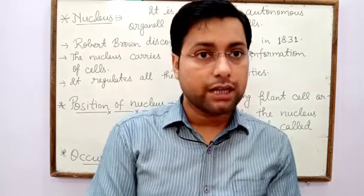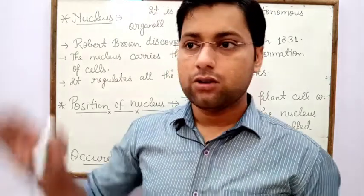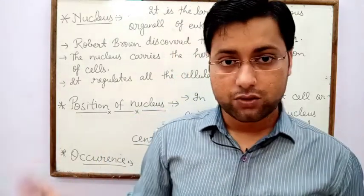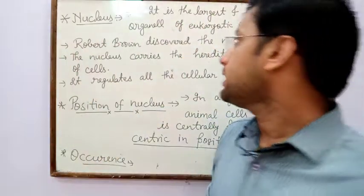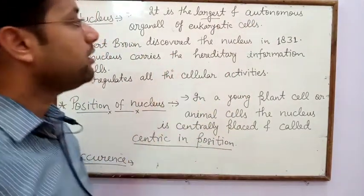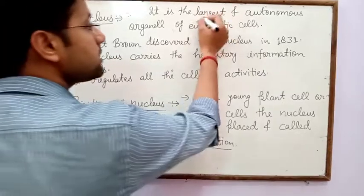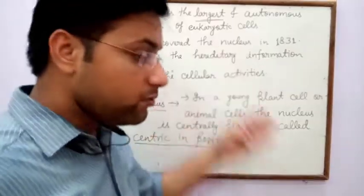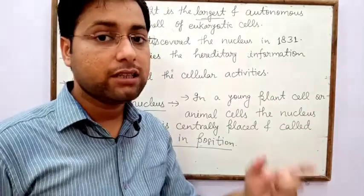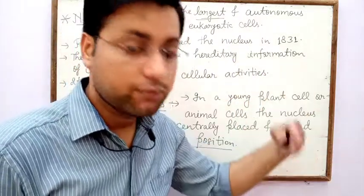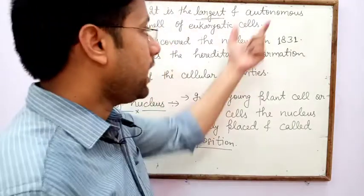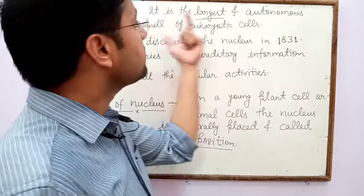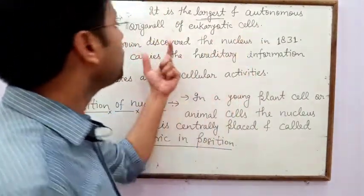Nucleus is not present or is undeveloped in prokaryotic cells like bacteria and cyanobacteria, that is blue-green algae. Nucleus commonly occurs in all eukaryotic cells — that is plant cell, animal cell, and fungal cell. The nucleus is the largest and autonomous organelle of eukaryotic cells. Autonomous organelle means the nucleus contains DNA, and DNA carries the parental character from one generation to the next.